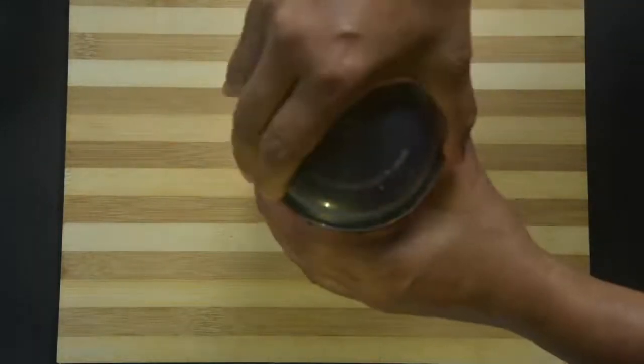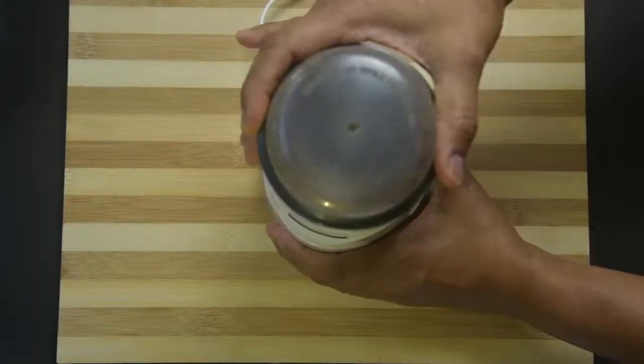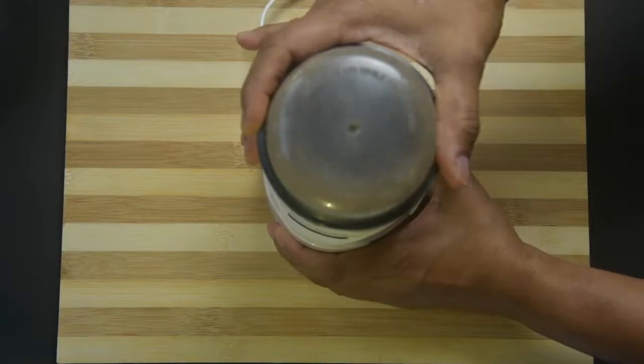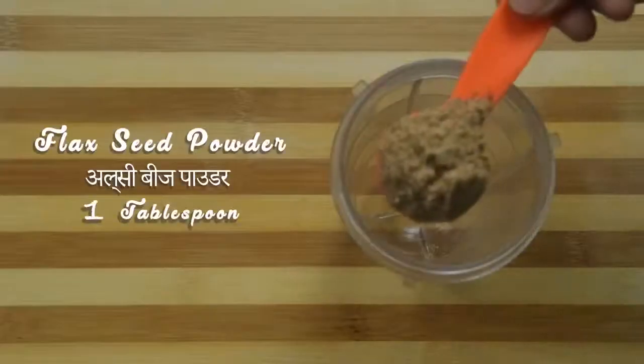Make a fine powder of the flax seeds. Take this fine powder to the wet jar of a mixer grinder.